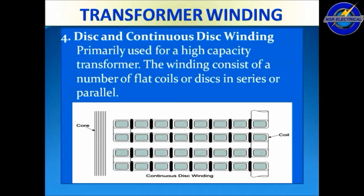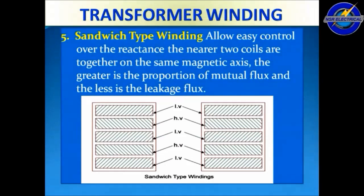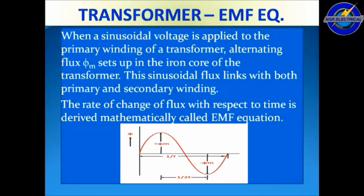The fourth one is disc and continuous disc winding, primarily used for high capacity transformers. The windings consist of a number of flat coils or disks in series or parallel. The fifth one is sandwich type winding, which allows easy control over reactance. When the nearest two coils are together on the same magnetic axis, the greater is the proportion of mutual flux and the less is the leakage flux.